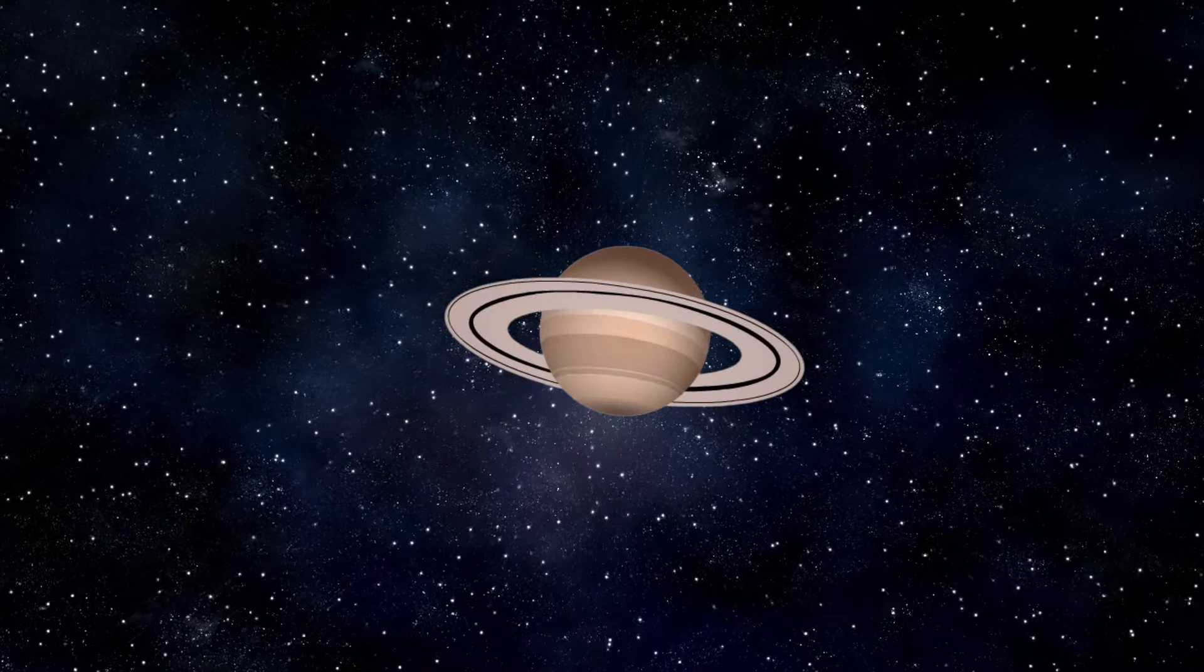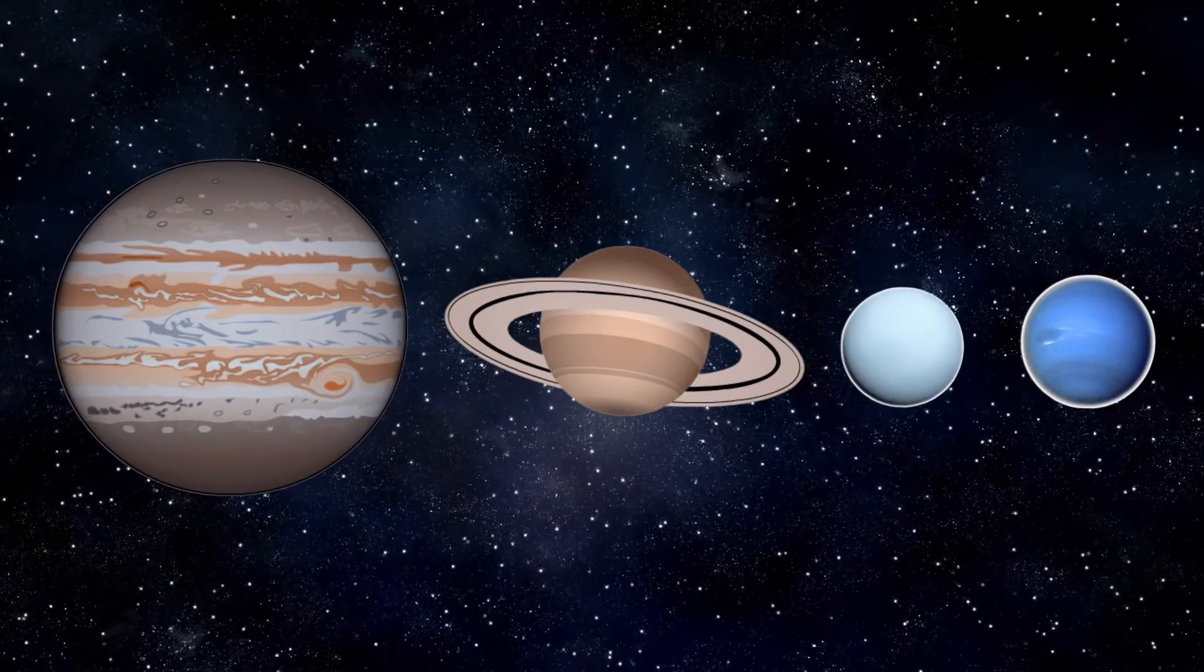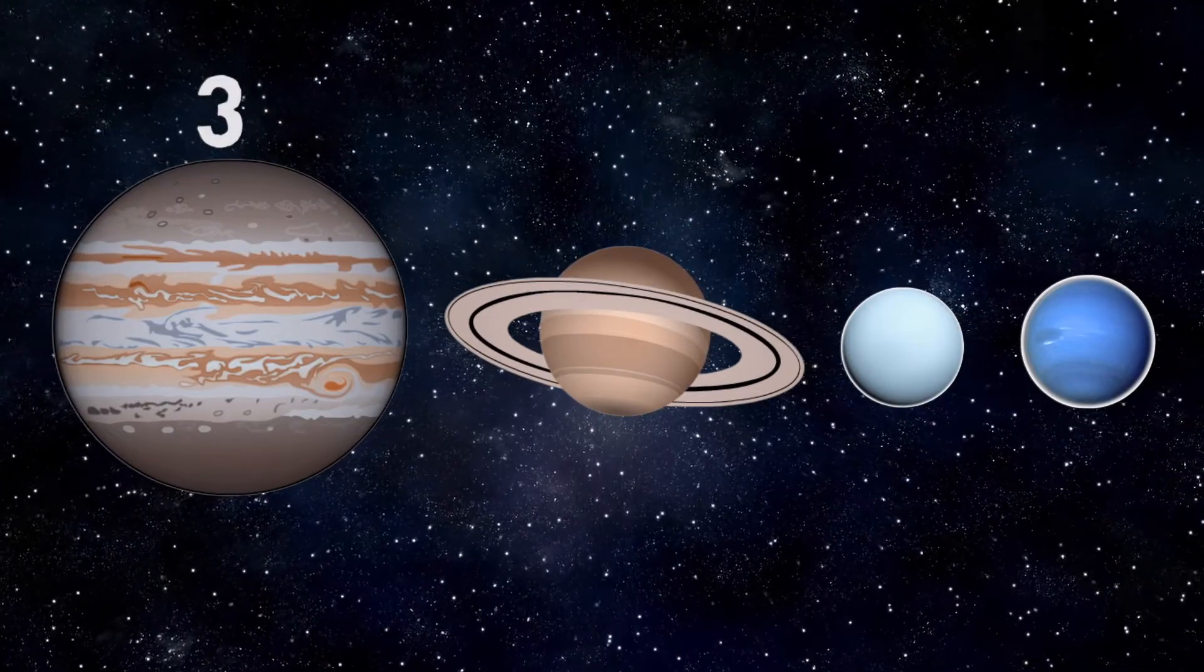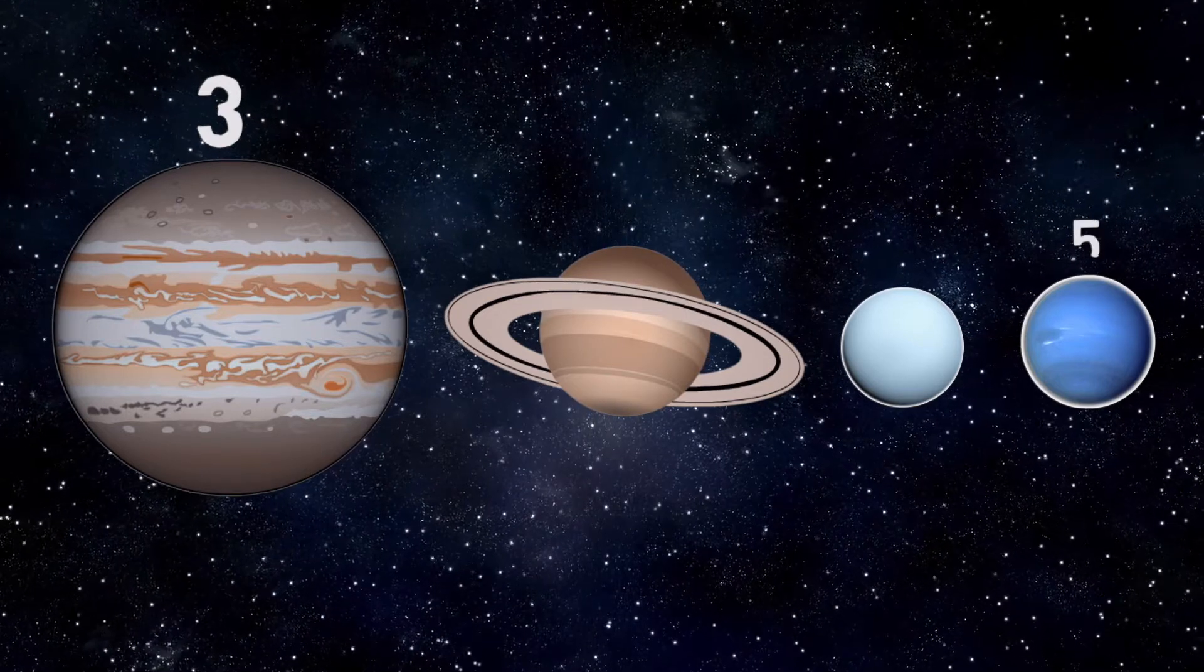Understanding Saturn's rings might begin with the fact that it's not the only planet around here that has them. Jupiter has three very faint rings, Neptune has five, Uranus has thirteen.